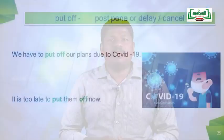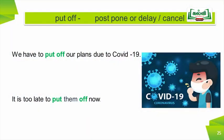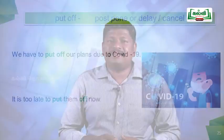The next phrasal verb is 'put off,' meaning to postpone, delay, or cancel. Examples: 'We have to put off our plans due to COVID-19' and 'It is too late to put them off now.' We have now learned four different types of phrasal verbs.